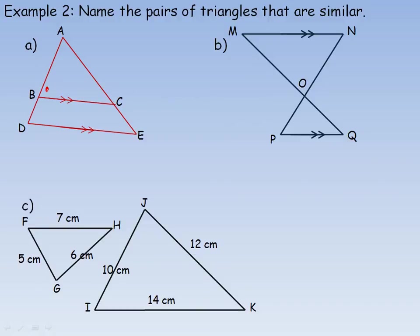Angle ABC in that triangle should equal angle ADE in this triangle. Also the corresponding angles ACB and AED would also be equal. We have a common angle up here — angle A is the same in both triangles. It's BAC in the small triangle and DAE in the large triangle. So these two triangles are similar: ABC is similar to ADE.